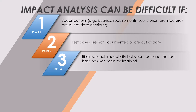The third point is that bidirectional traceability between tests and the test bases has not been maintained. If each requirement has a link to a test case, then when requirements are changed, we know that linked test cases need updating and shall be executed. But if there is no link between requirement and test case, we cannot evaluate how many test cases shall be changed.